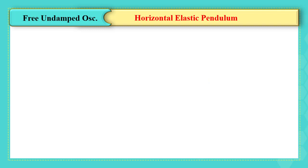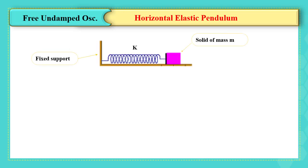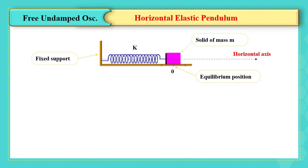To study the characteristics of free undamped mechanical oscillation in physics, we consider a horizontal elastic pendulum formed of a solid of mass m and a spring of stiffness k of negligible mass and non-joint turns. The solid is attached to one end of the spring, whose other end is attached to a fixed support. x' or x is a horizontal axis positively oriented to the right. When the spring is neither elongated nor compressed, the abscissa of G is x = 0, which is called the equilibrium position.